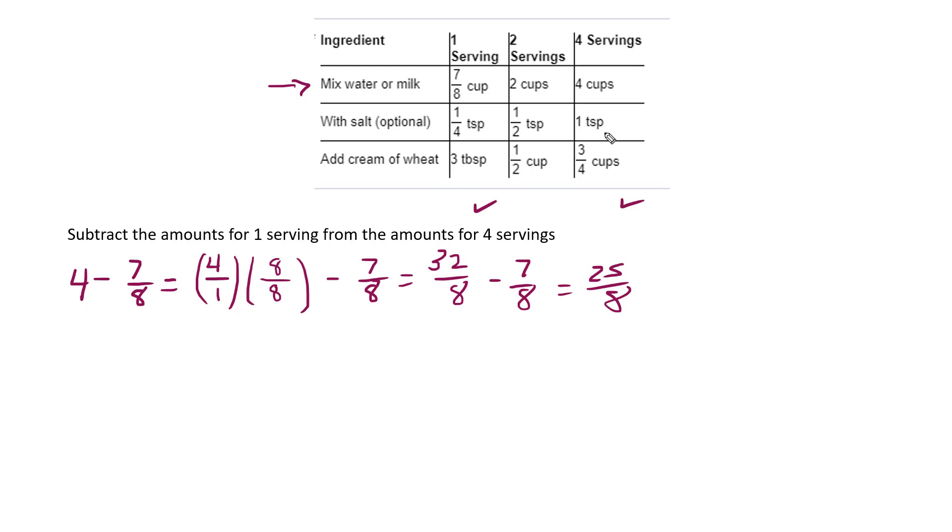All right, the next line is 1 teaspoon minus 1 fourth teaspoon. So once again, I get my least common denominator, so 4 over 4 minus 1 fourth. 1 times 4 is 4 over 4 minus 1 fourth, and I get 3 fourths. I have some videos as well about how to add and subtract fractions that you can also look at if this is going a little fast.